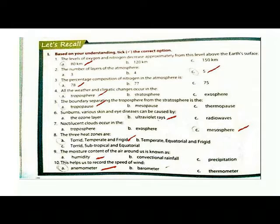Question 1: The level of oxygen and nitrogen decreases approximately from this level above the Earth's surface - 80 km. Question 2: The number of layers of the atmosphere - 5.